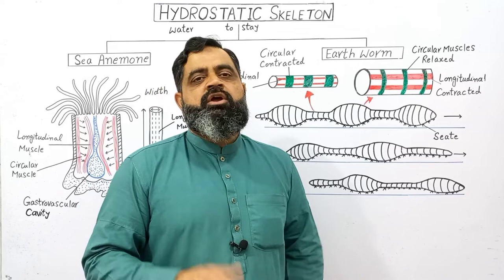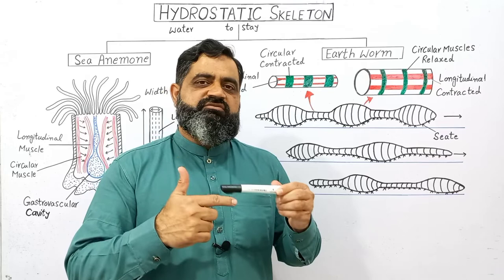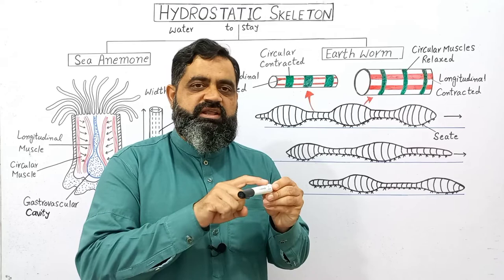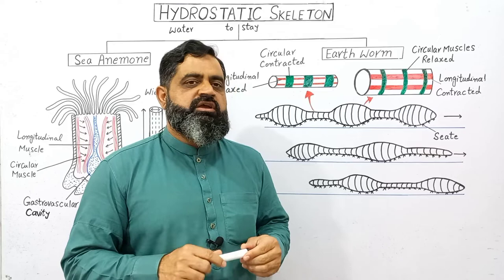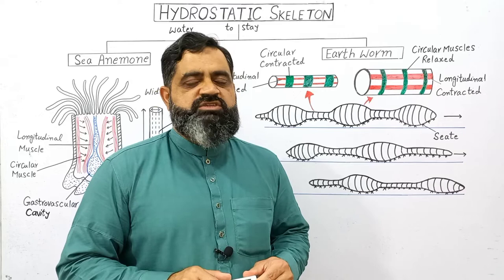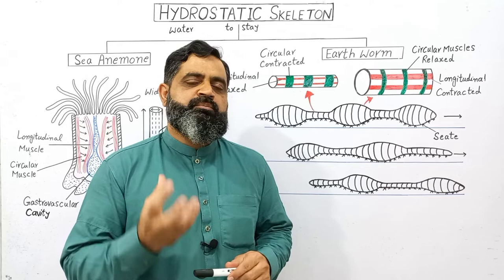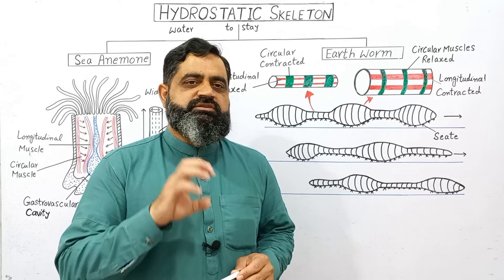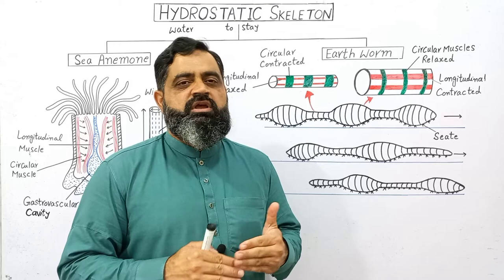The first are circular muscles, present around the circumference of the body, while the second are longitudinal muscles, which run along the length of the body. When both of these muscles contract and relax alternately, they produce a skeleton inside the body of the earthworm and also help in locomotion. There is a coelom present inside the body of the earthworm which is filled with coelomic fluid. When the muscles contract, they exert pressure on the coelomic fluid, which distributes the pressure along the whole body and produces locomotion.